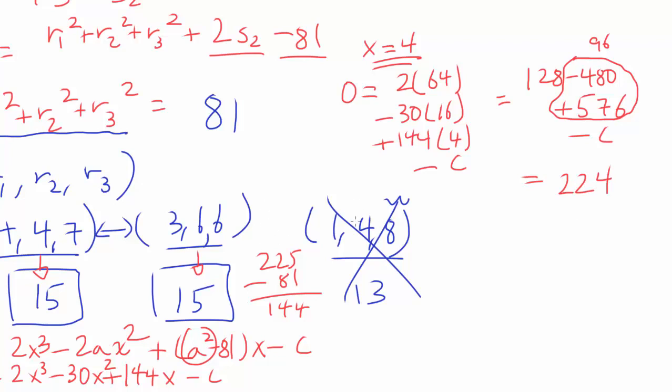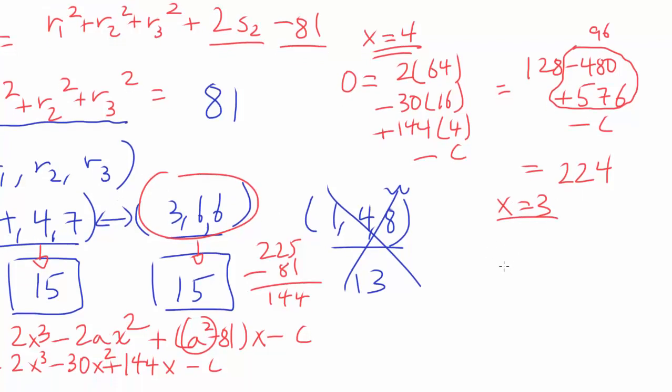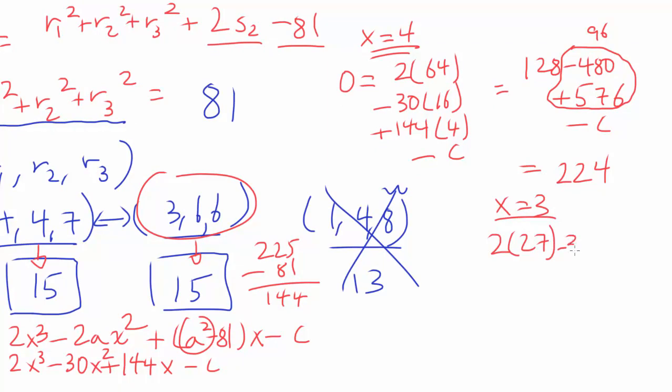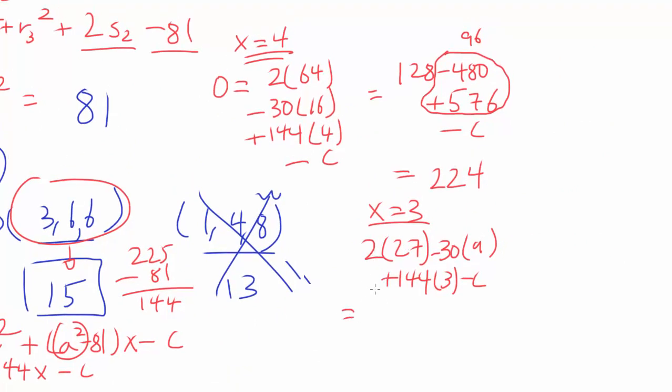Now let's try 3, 6, 6. Let's choose x = 3, and we have, plugging it in, 2 times 27 minus 30 times 9 plus 144 times 3 minus c. We have 54 minus 270 plus 432 minus c = 0, and that's going to get us c = 54 + 432, which is 486, minus 270, which is 216.